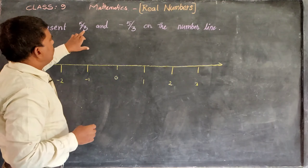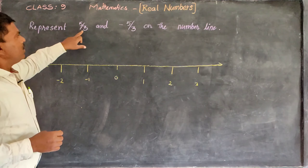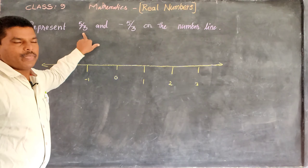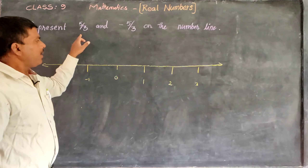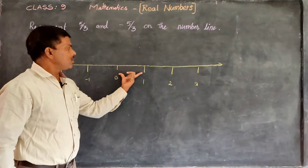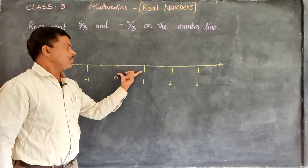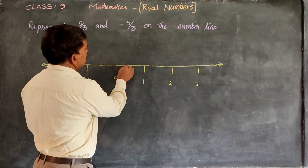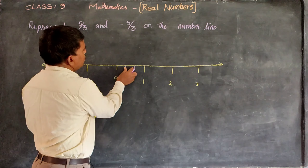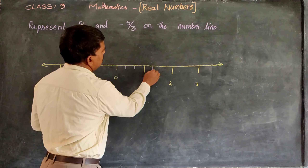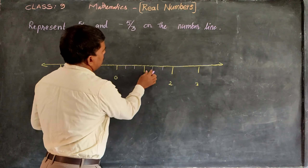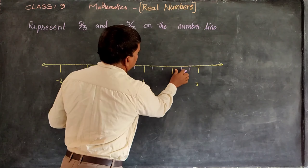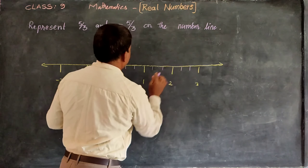If you observe this fraction 5/3, the denominator is 3. So we have to divide each part into 3 equal parts. Counting: 1, 2, 3 — again 1, 2, 3 — again 1, 2, 3, like that.